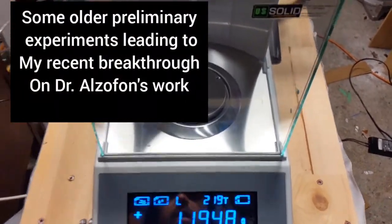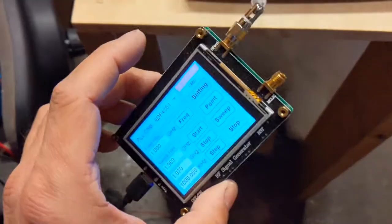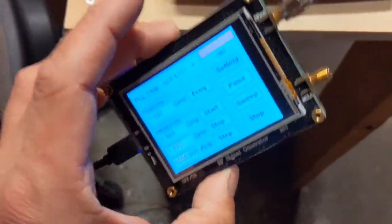I'm going to do a quick demo here of what happens when I put this RF generator near the scale, just to show that there's no interference.